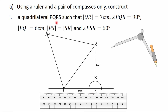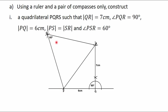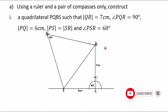We are now done with the construction of the quadrilateral PQRS. The length of side PQ is six centimeters, the angle PQR is 90 degrees, the length of side QR is seven centimeters, and the length of diagonal PR equals the lengths of side PS and side SR, with angle PSR equal to 60 degrees. In the next video we will continue with the solution to the remaining parts. See you then — bye-bye.